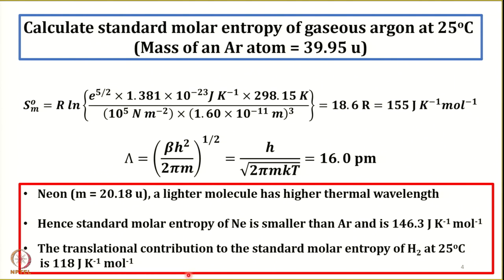You can clearly see how the molar mass of a given species affects its molar entropy: argon (39.95 g/mol) gives 155 J/K/mol; neon (20.18 g/mol) gives 146.3 J/K/mol; hydrogen (2 g/mol) gives 118 J/K/mol. Let us further discuss what other types of equations we can develop from the Sackur-Tetrode equation.